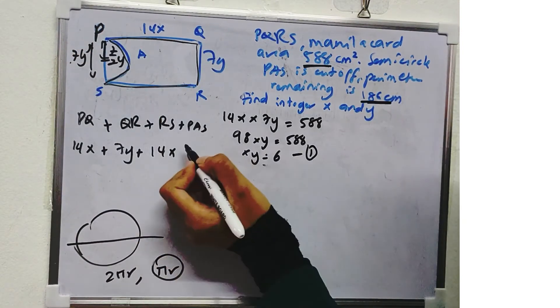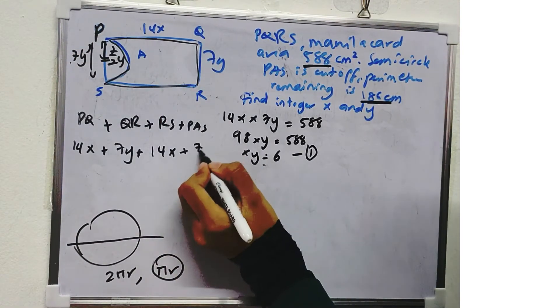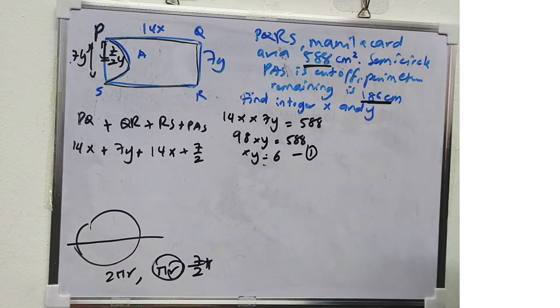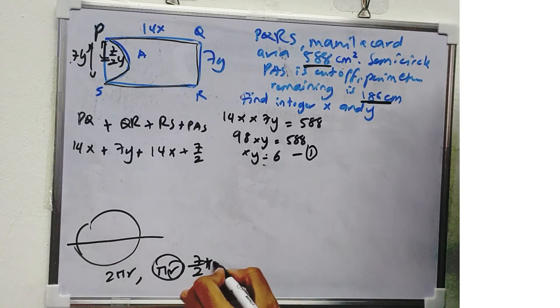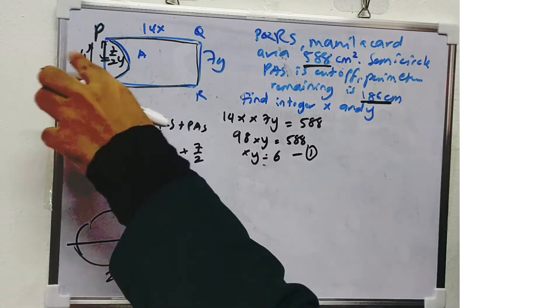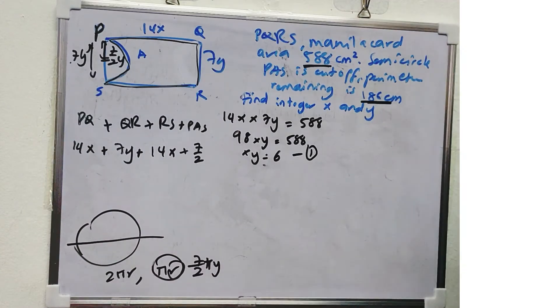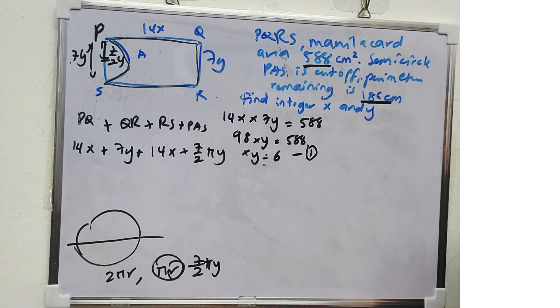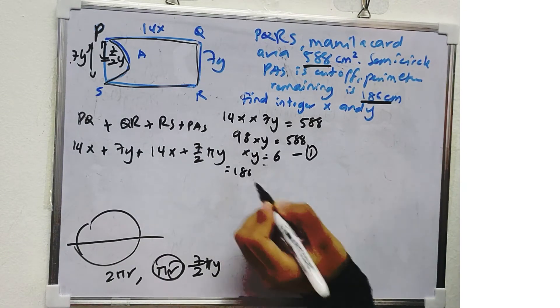So we see here, plus 7 over 2, R is 7 over 2 π. Sorry, 7 over 2 π Y. Because we have Y, right? Yes. So 7 over 2 π Y, which is equal to 186.